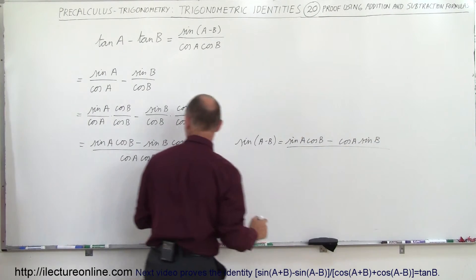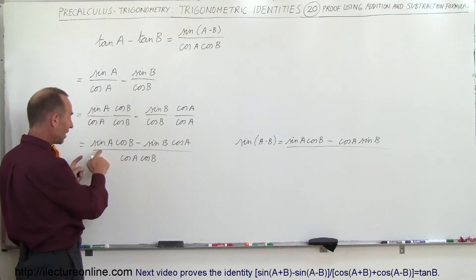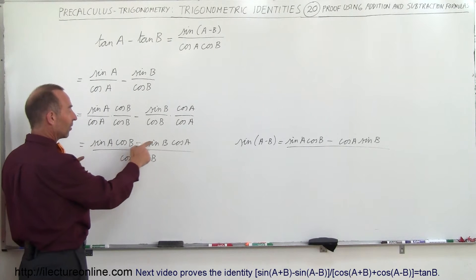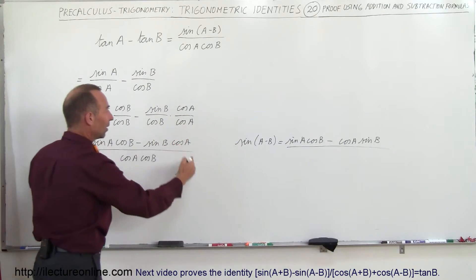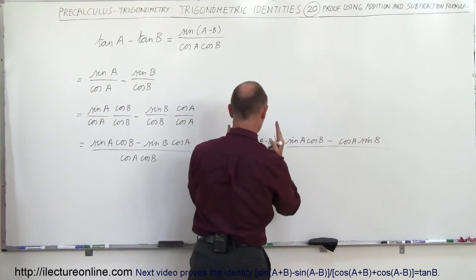And if you look at this and you look at this, sine A cosine B minus sine B cosine A. This is reversed, but it looks the same. So this is equal to this, which is equal to this.